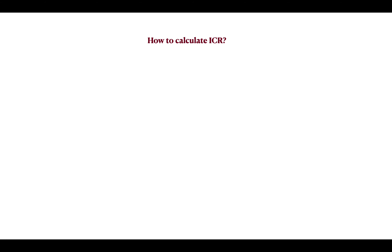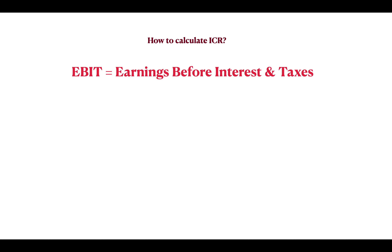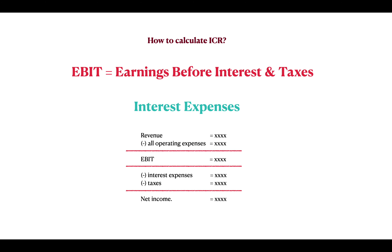To calculate the Interest Coverage Ratio, we need to find a company's earnings before interest and taxes (EBIT) and its interest expenses for a period of time. You can find these numbers on the income statement of a company. Looking at a typical income statement, you have revenue at the top line; if you subtract all the operating expenses for the business, you get the earnings before interest and taxes — that is EBIT. This is the earnings available to pay interest and taxes.